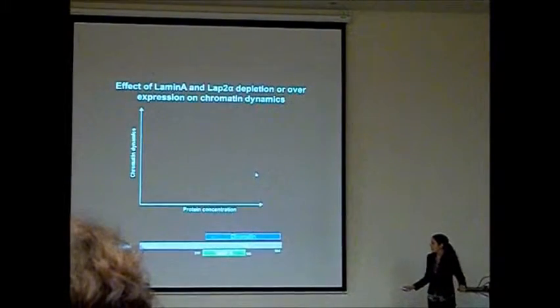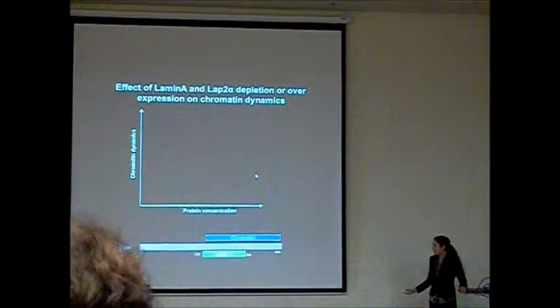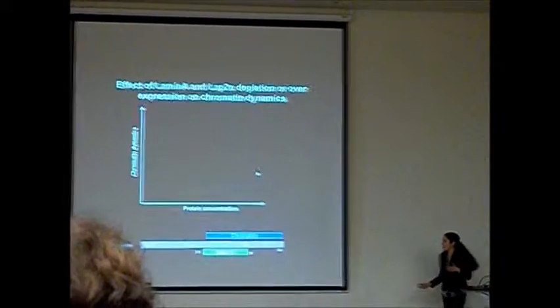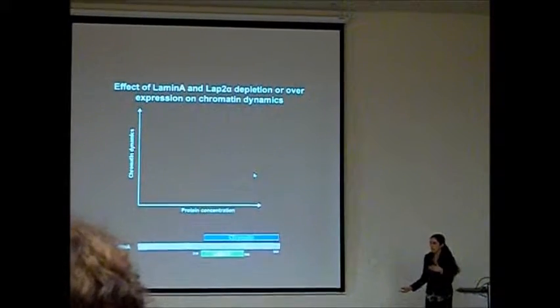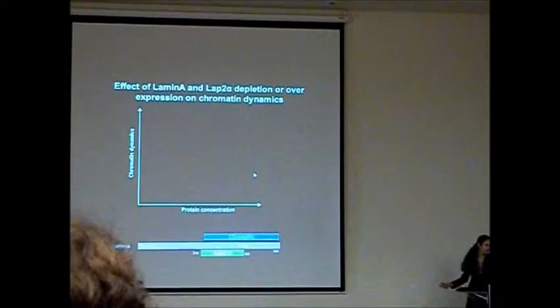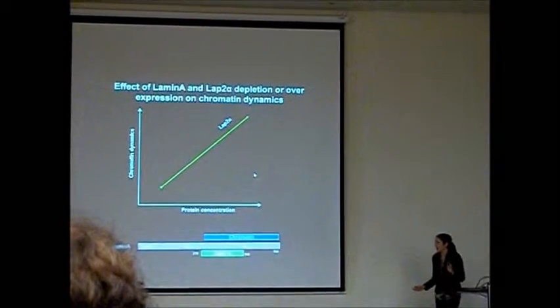It's known from the literature that lamin A binds to LAP2-alpha proteins and to chromatin in the same region. So we asked ourselves, if depletion of LAP2-alpha will lead to the same effect on chromatin motion like lamin A. And the result was really surprising.